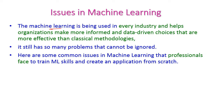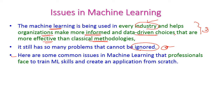In the modern world, machine learning is dominating in each and every industry, which helps organizations to make more informed and data-driven choices. Those choices are more effective when compared to classical methodologies. Though it has very big advantages, it is also having some problems which cannot be ignored. Here are some of the common issues in machine learning that developers face to train models and create applications from scratch.